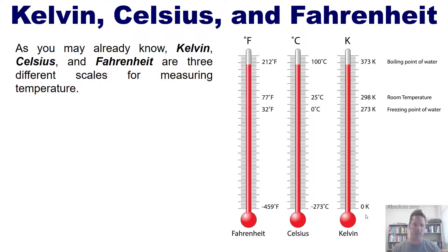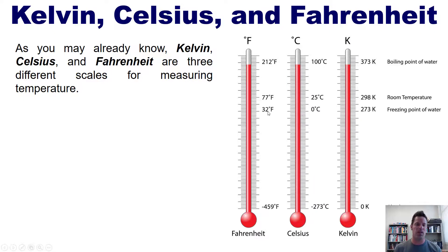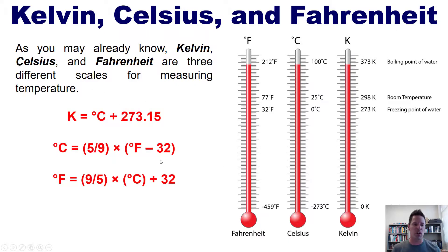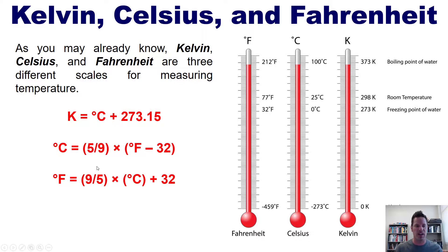We end with temperatures: Kelvin, Celsius, and Fahrenheit — three different scales for measuring temperature shown clearly in this figure. Zero degrees Celsius is the freezing point of water, which lines up with about 32 degrees Fahrenheit and 273 Kelvins. The lowest theoretical Kelvin temperature is zero Kelvin, also called absolute zero, which corresponds to negative 273 degrees Celsius and negative 459 Fahrenheit. These are the equations for interconverting between Kelvin, Celsius, and Fahrenheit. I will not require you to memorize the Celsius-to-Fahrenheit conversion, but I do advise memorizing the interchange between Celsius and Kelvin.